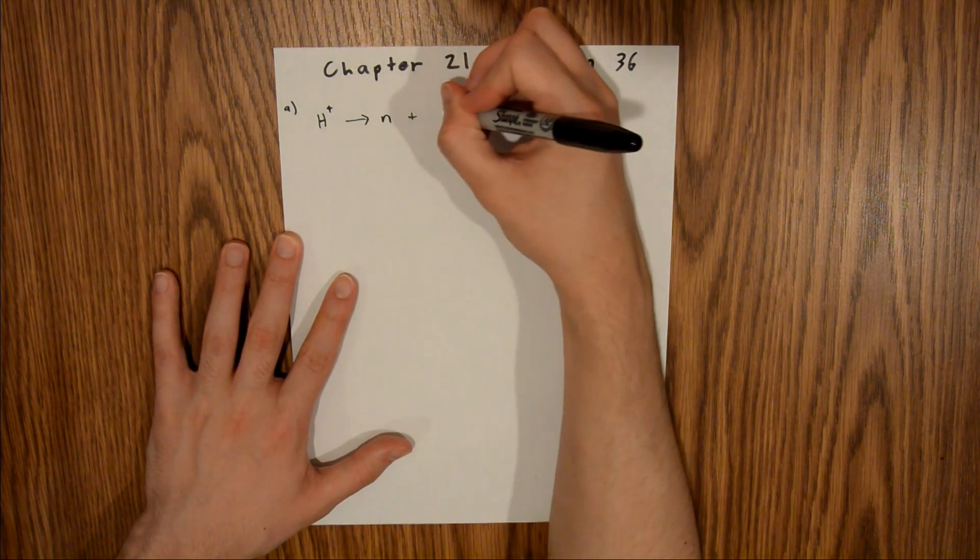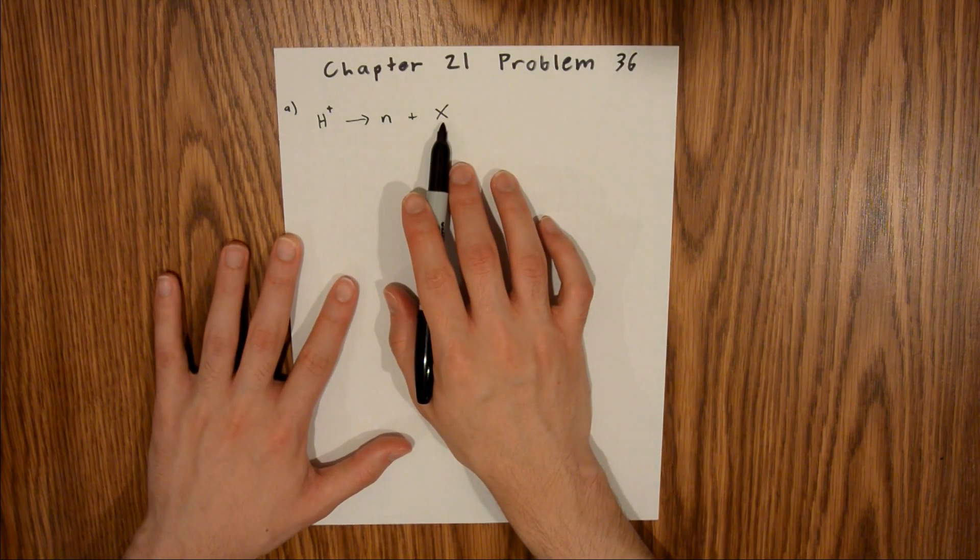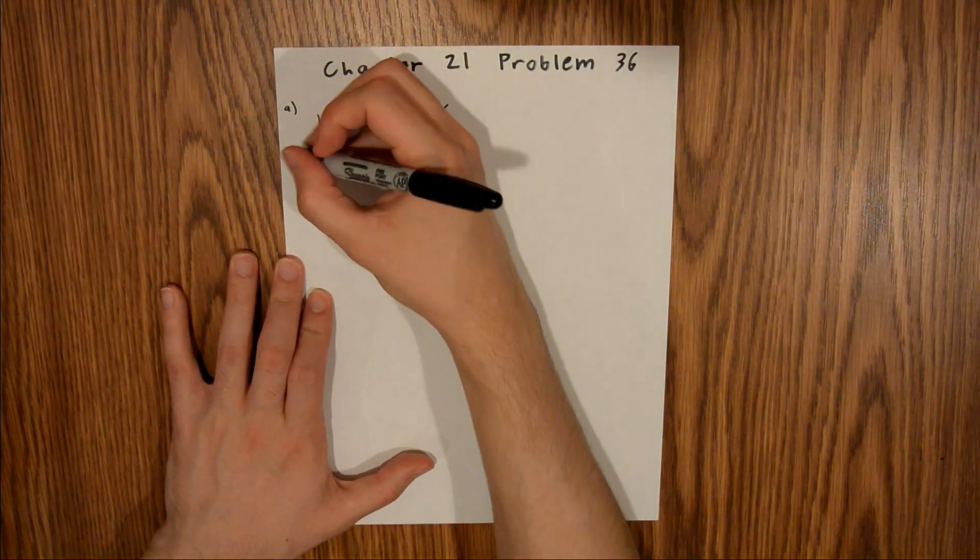So for now, I'm going to just say plus x, and then we can figure out what x is by doing a charge balance. A proton has a charge of plus 1,